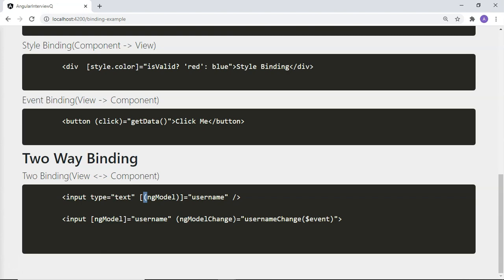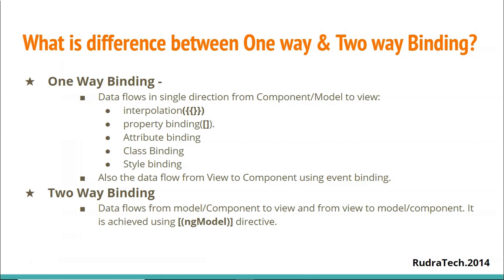Now let's form a comprehensive answer. One-way binding is a way of data flow in a single direction from component or model to the view, achieved using interpolation, property binding, attribute binding, class binding, and style binding. Data can also flow from view to component using event binding. Two-way binding is a flow of data between component and view in both directions, achieved using the ng-model directive. To use ng-model you must also include the FormsModule in the app module.